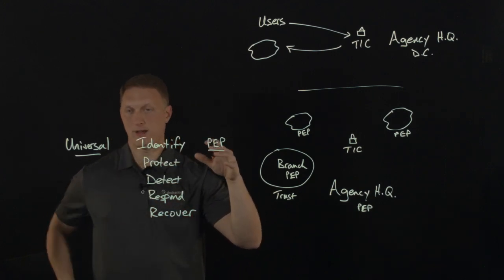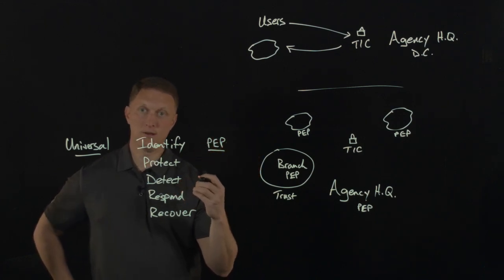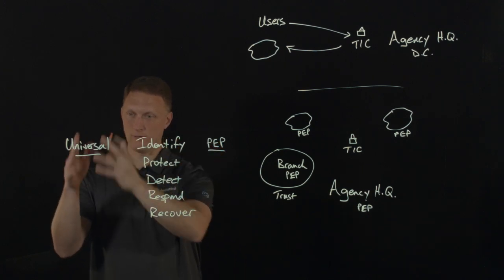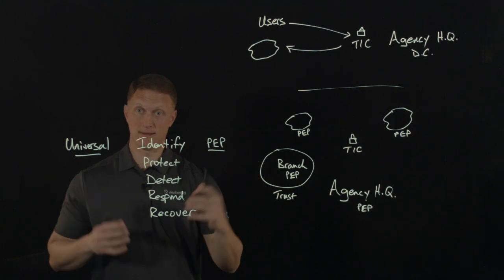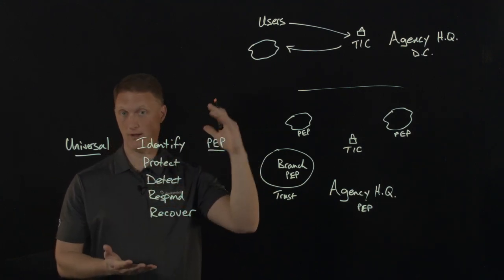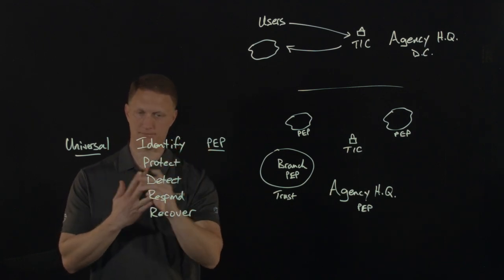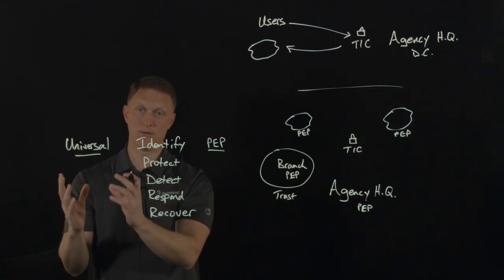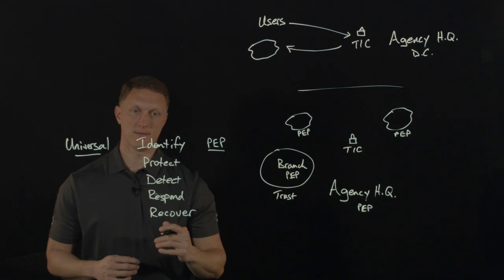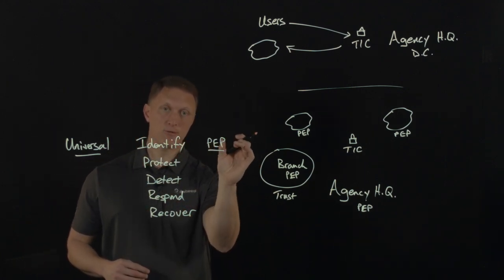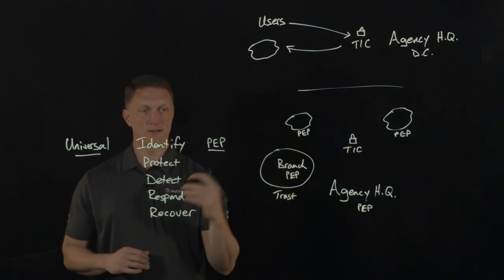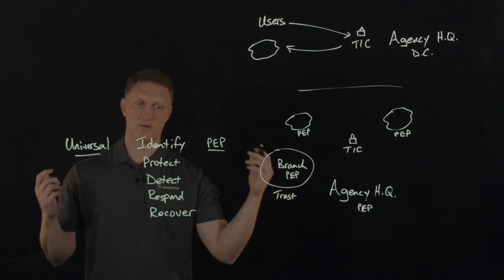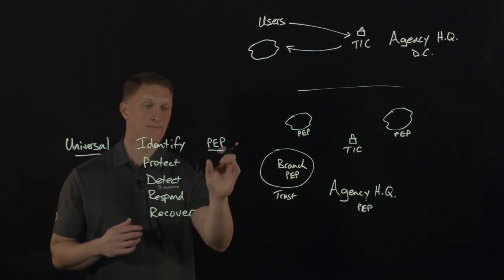So F5 has done a great job. We have a matrix, a mapping document that maps based on the NIST cybersecurity framework that actually maps F5 technologies against each of the universal and policy enforcement point security capabilities. There are things like our access policy manager or our big IQ system or the LTM or the advanced WAF that are going to handle the universal security capabilities against each of these core security functions. And then on the policy enforcement point side, the one that's closer to the data, you can look at things like our automation tool chain, our open APIs, our DNS services, things like NGINX plus or SSL orchestrator or our shape technology for bot protection.